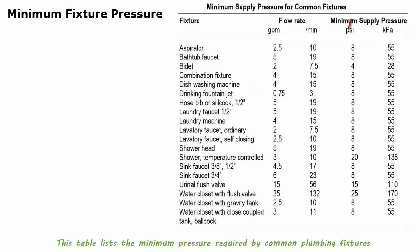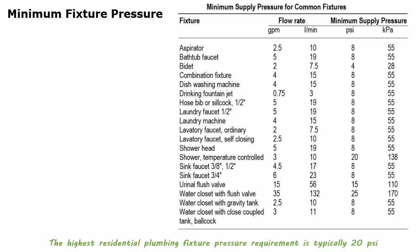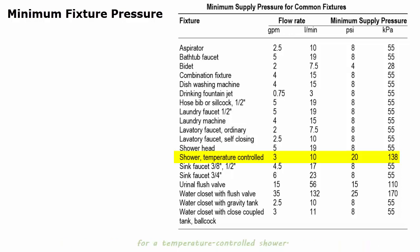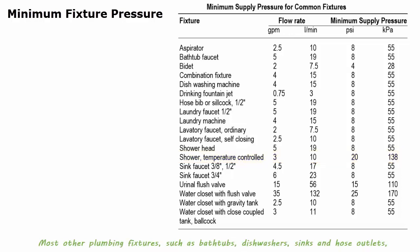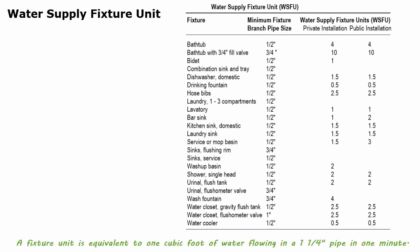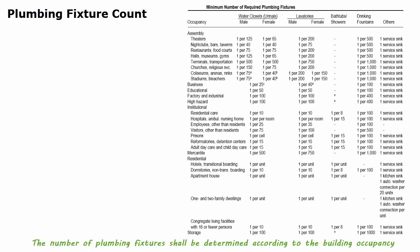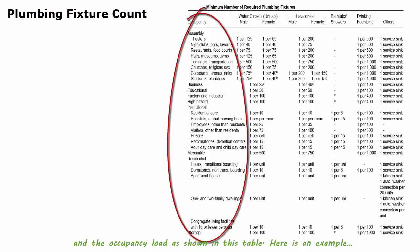This table lists the minimum pressure required by common plumbing fixtures for them to work properly. The highest residential plumbing fixture pressure requirement is typically 20 psi for a temperature-controlled shower. Most other plumbing fixtures, such as bathtubs, dishwashers, sinks, and hose outlets, require a pressure of 8 psi. A fixture unit is equivalent to one cubic foot of water flowing in a 1¼-inch pipe in one minute, and is used for sizing both water supply and wastewater pipes. Different fixtures are rated for different fixture units based on the flow rate they require.